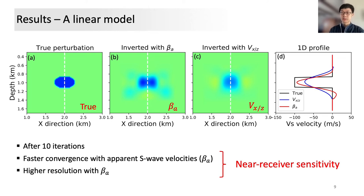After 10 iterations, the true perturbations and the inversion results are shown in figure A, B, and C. The corresponding 1D profiles along the white dashed line are shown in figure D. First, the inverted maximum perturbations from apparent S-wave velocity measurement is more accurate than that from translational velocities after the same iteration. Second, the resolving power of the new observable is also higher than the velocity component. This can be attributed to the more concentrated sensitivity of the combined observables.